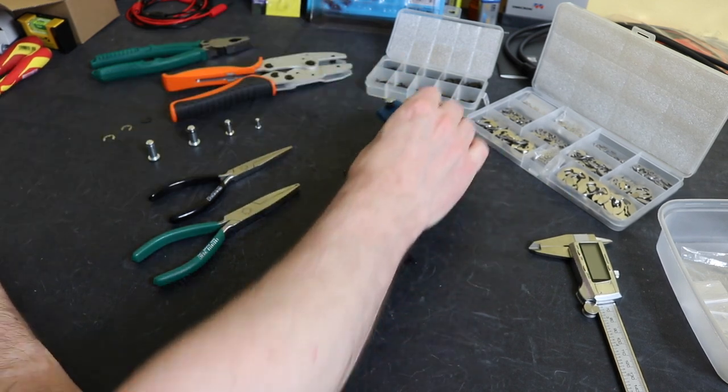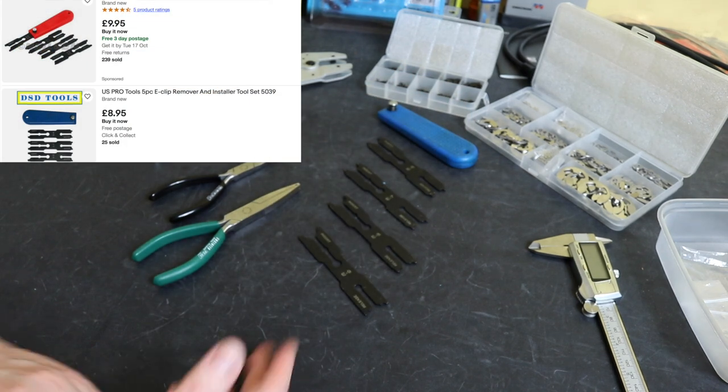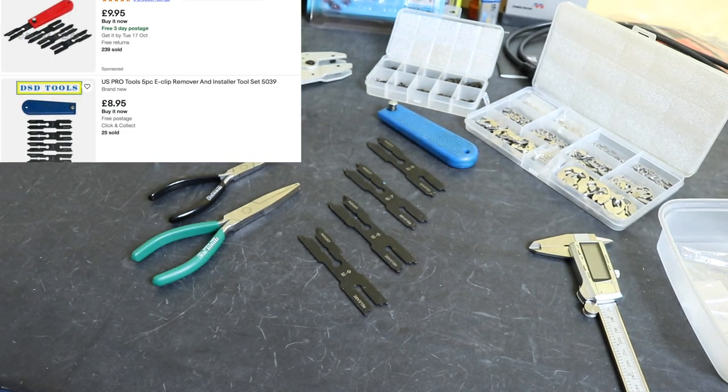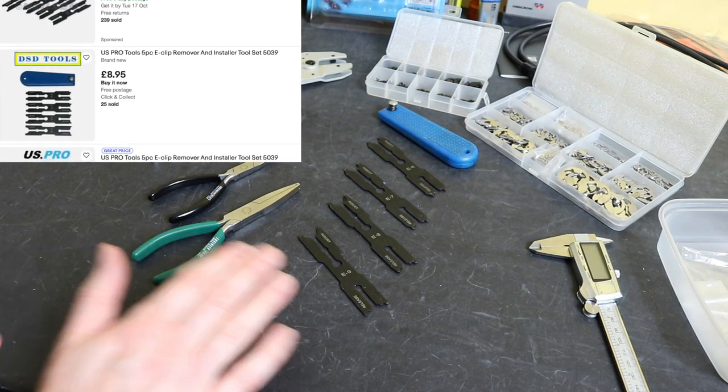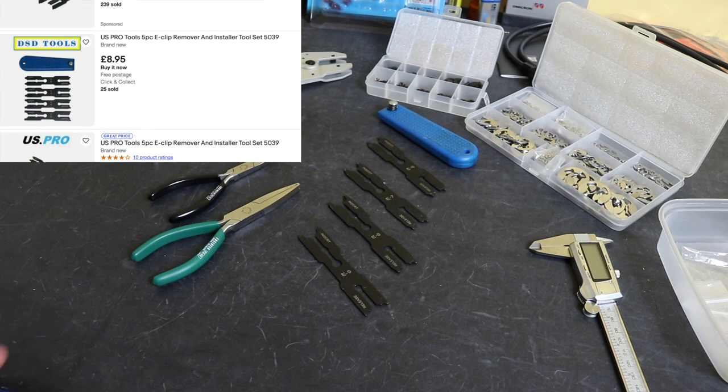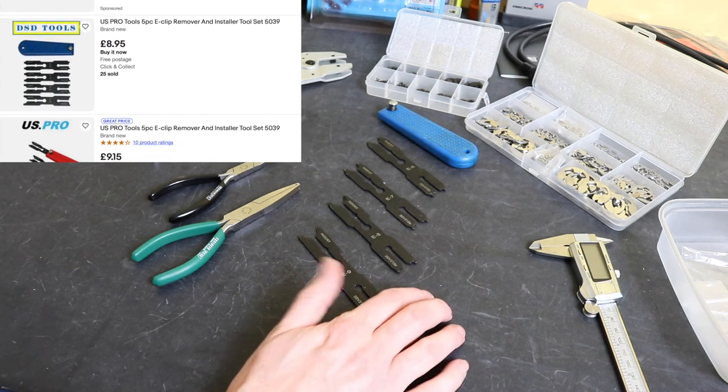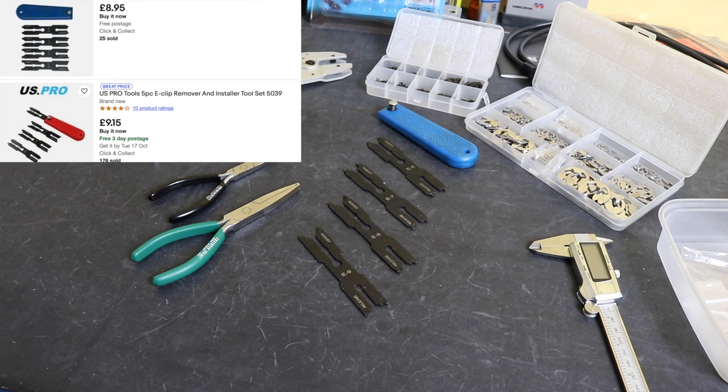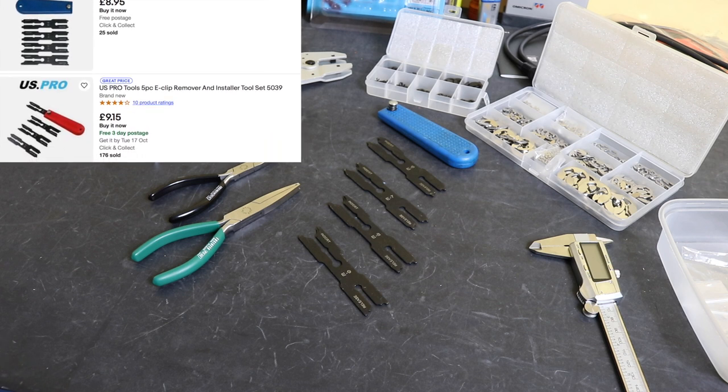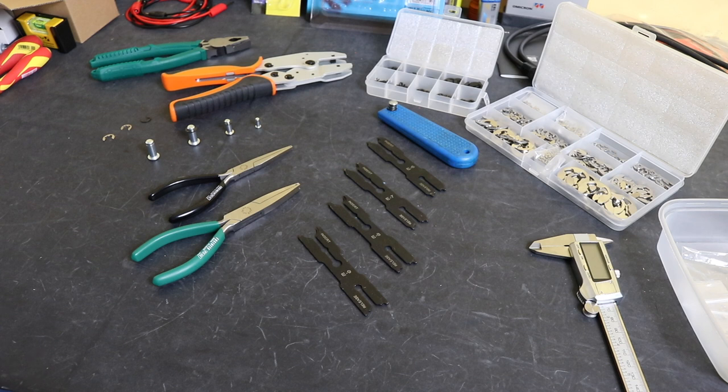You can get it from Amazon and eBay. There's a number of different manufacturers that make this device, all kinds of makes, but they cover the same range and operate in the same manner. You get this from £9 up to £15.